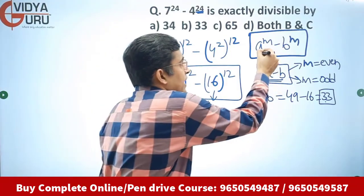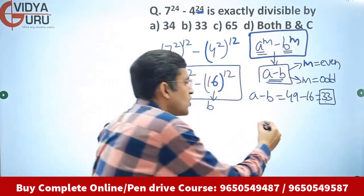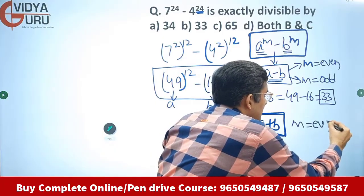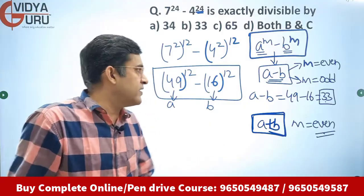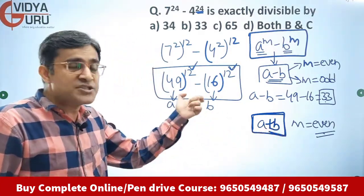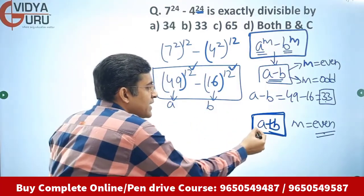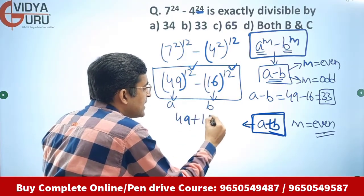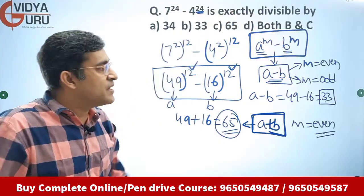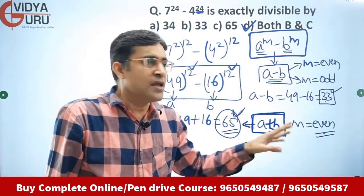One more thing: a raised to power m minus b raised to power m is also divisible by a plus b when the power m is even. The power here is 12, and 12 is an even power. So 49 raised to power 12 minus 16 raised to power 12 will also be divisible by a plus b, that is 49 plus 16 equals 65. This expression is therefore divisible by both 33 and 65, so the answer is both B and C.